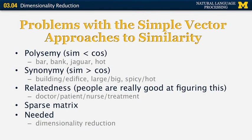The simpler vector approaches to similarity that we looked at so far have a few problems. In many cases, there is a problem with polysemy. That's when the actual similarity between the words is smaller than what the cosine similarity would make you believe. That includes words with multiple senses such as bar, bank, jaguar, or hut.